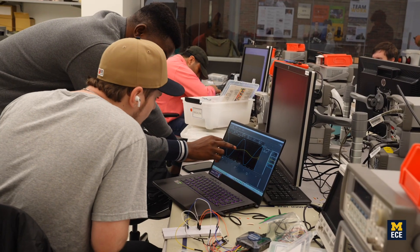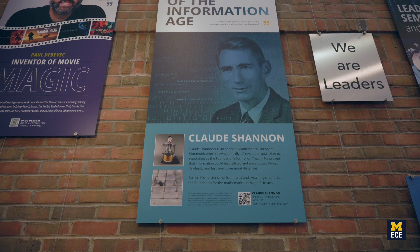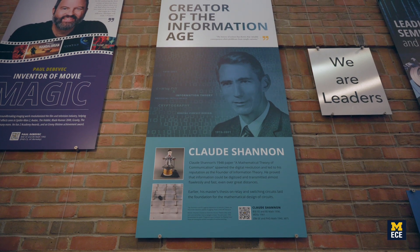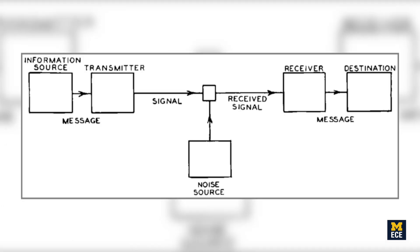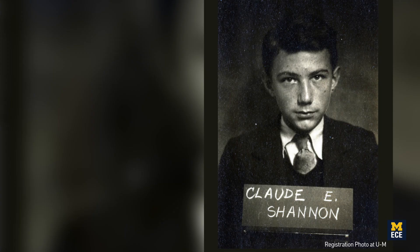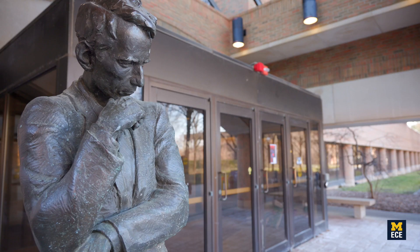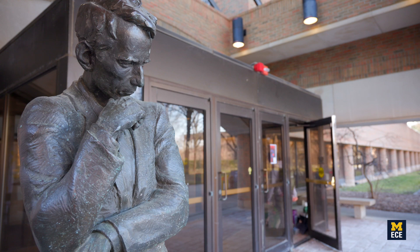Computers are used to process analog signals using measurements and samples obtained at fixed time intervals. Students learn Claude Shannon's sampling theorem, which is a critical link between an analog signal and the corresponding digital — in other words, sampled — signal. As a side note, Shannon was a Michigan native and UM alum, and you can walk by his sculpture every time you walk in the west entrance of the EECS building.